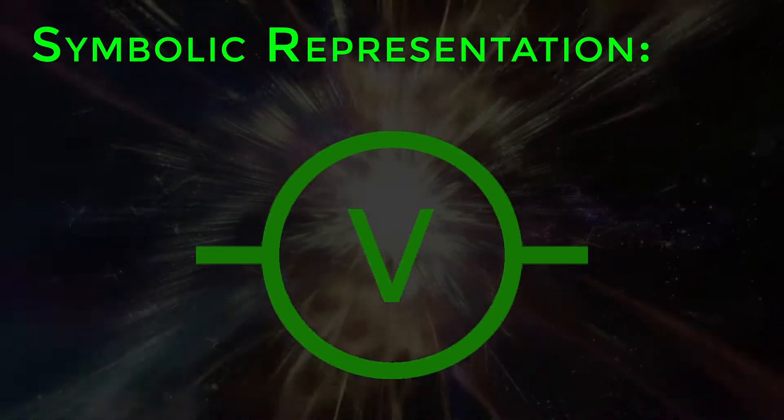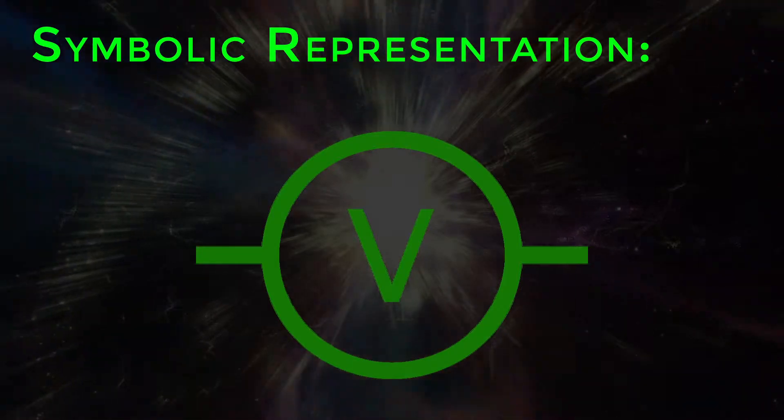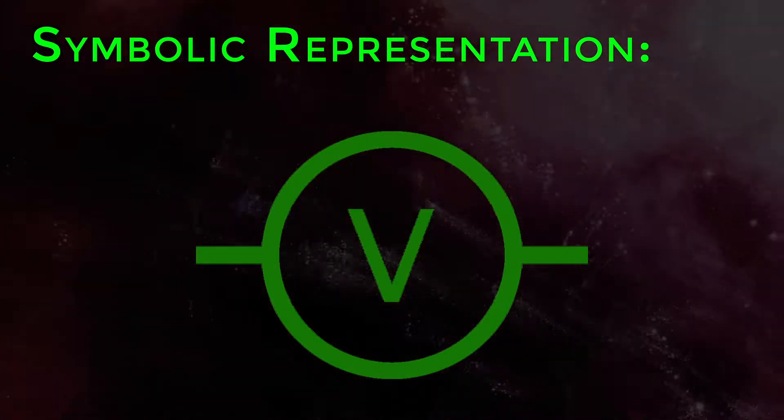Symbolic representation. A voltmeter in a circuit diagram is represented by the letter V in a circle as shown here.